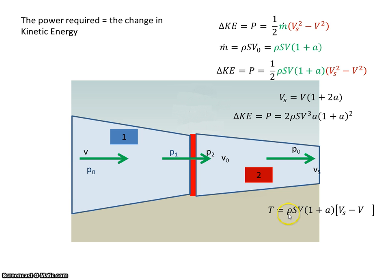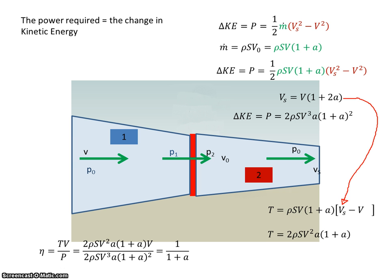Similarly, the thrust — well, the thrust is mass times acceleration. There's the mass of the air, and the acceleration is the change in velocity, so that's Vs minus V. I have an expression for Vs, and if I substitute that in, I get that the thrust produced is 2ρ·S·V²·A·(1 + A). So the efficiency of a propeller is the thrust produced times the forward velocity of the aircraft, divided by the power input. When you multiply out and cancel, you're left with 1 over (1 + A). So the efficiency of the propeller is 1/(1 + A).